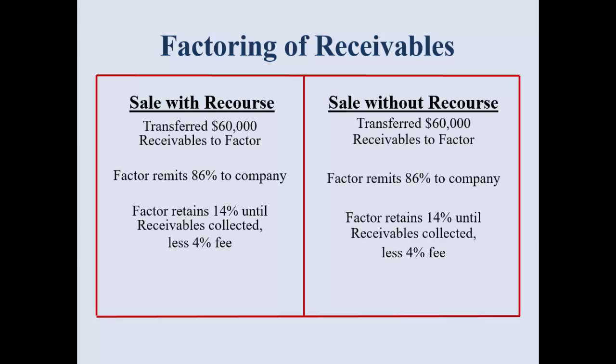Looking at examples, we're going to use the same numbers. In practice, the fee usually is lower if it's with recourse, but for this example it's important to see side by side the same numbers — how do I record the journal entry differently? With recourse, I have a $3,000 liability, meaning I've sold $60,000 of my receivables but the factor has the right to return up to $3,000 of them to me. Without recourse, there is no recourse liability — it's a true sale and the factor takes the burden of uncollectibility.